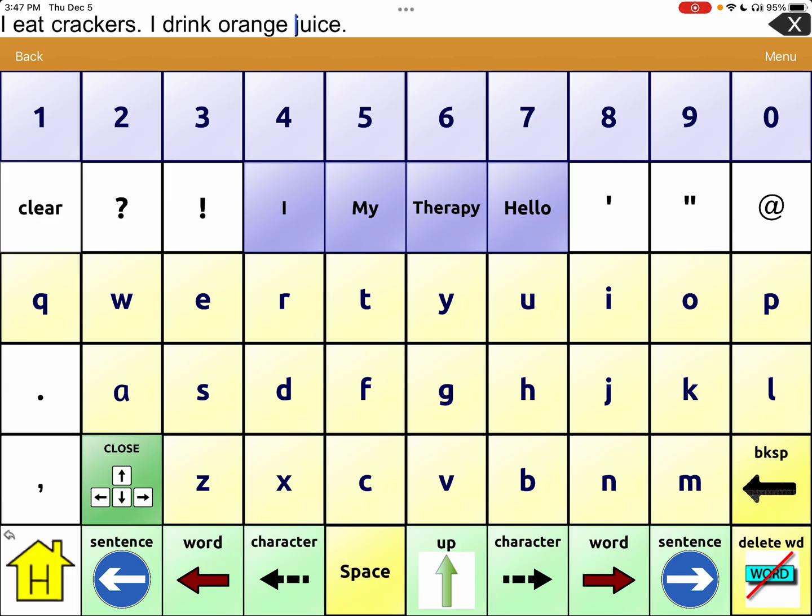I drink crackers and I drink orange juice. Okay, let's say now that I want to go back to the first sentence to fix that. So instead of hitting word, word, word, word, I can hit the arrow that says sentence and it will go back to right before the second sentence.